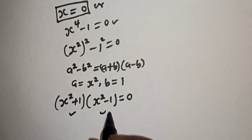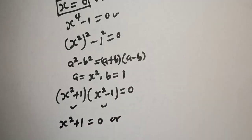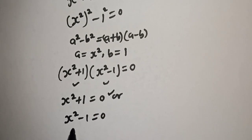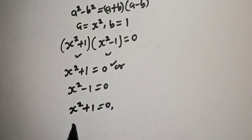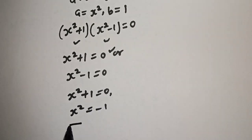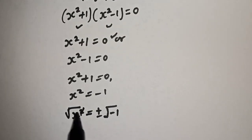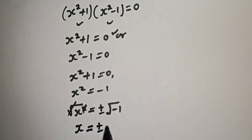There are two cases here also. The first case is x squared plus 1 is equal to 0. From here, x squared is equal to minus 1. Let's take the square root of both sides. The square root of x squared is equal to plus or minus the square root of minus 1. We cancel the square, and we know that the square root of minus 1 is equal to i. So x is equal to plus or minus i.